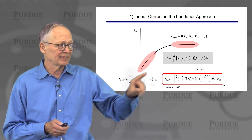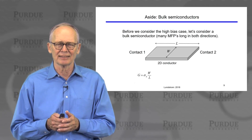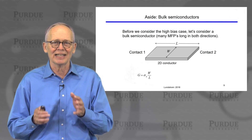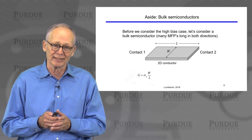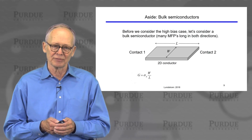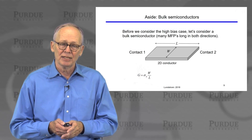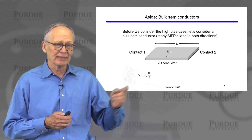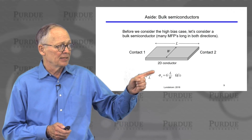Before going to the high bias case, I want to say a little more about the low field transport expression for a bulk device — a device very large compared to the mean free path for backscattering, so that diffusive transport always holds. This is the regime of classical semiconductor physics developed in the 60s and 70s. In 2D, the conductance is written as sheet conductance times width divided by length, increasing with width (more parallel paths) and decreasing with length (more scattering).